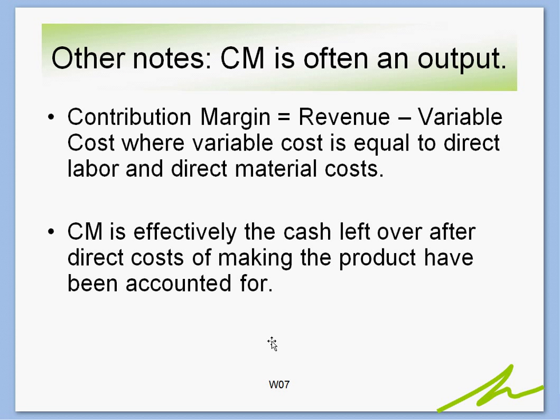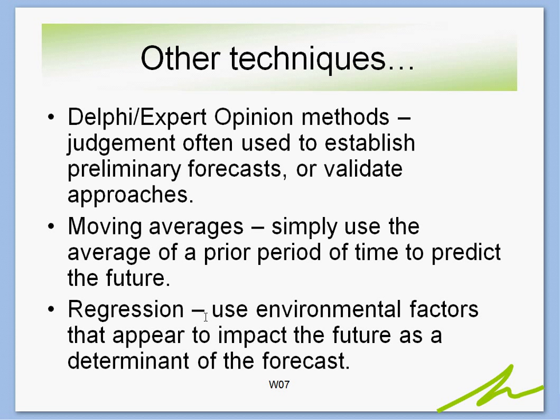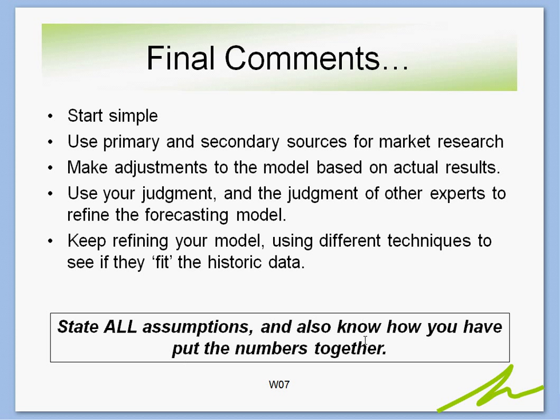Contribution margin is often a key output of forecasting. Contribution margin equals revenue minus variable cost, where variable cost equals direct labor and direct material costs. It's effectively the cash left over after direct costs from making the product or delivering the service have been accounted for. Other forecasting techniques include the Delphi or expert opinion technique — judgment used to establish preliminary forecasts or validate approaches — moving averages, which use the average of a prior period to predict the future, and regression, which uses different environmental factors that appear to impact the future as a determinant of the forecast.